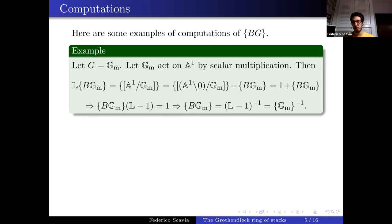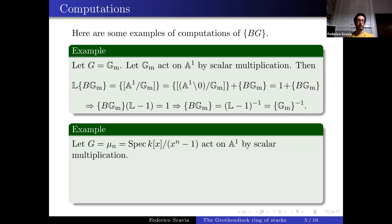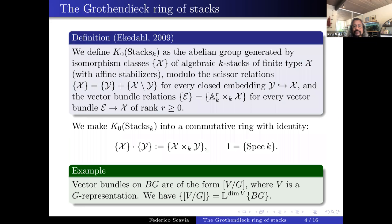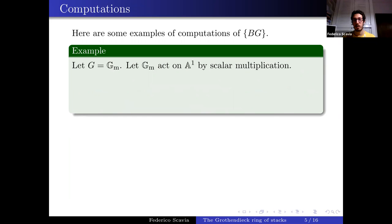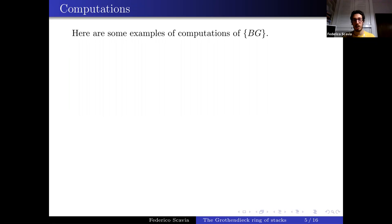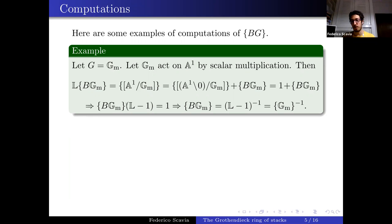Just to clarify: I did not a priori invert anything, but it turns out that L − 1 happens to be invertible in this ring, by this formula. So I can write the class of BGm as (L−1)^{−1}.